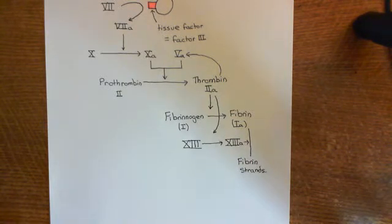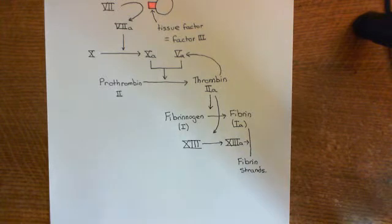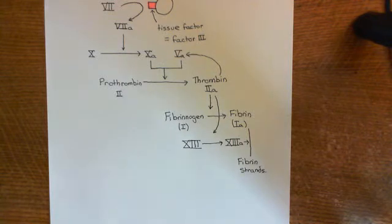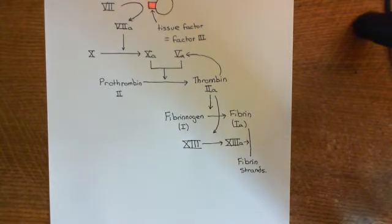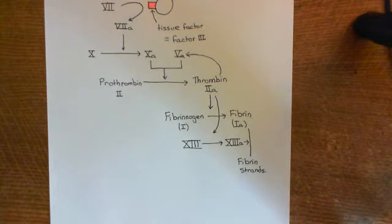Those then are the three steps of the haemostatic pathway. You get vasoconstriction to reduce blood flow to the affected area. You then get platelet aggregation to form a primary platelet plug. And then in amongst the aggregating platelets, you get fibrin deposition or coagulation — the formation of fibrin strands from fibrinogen, the inert compound within the blood — and those fibrin strands form a very dense meshwork that holds the platelets together.